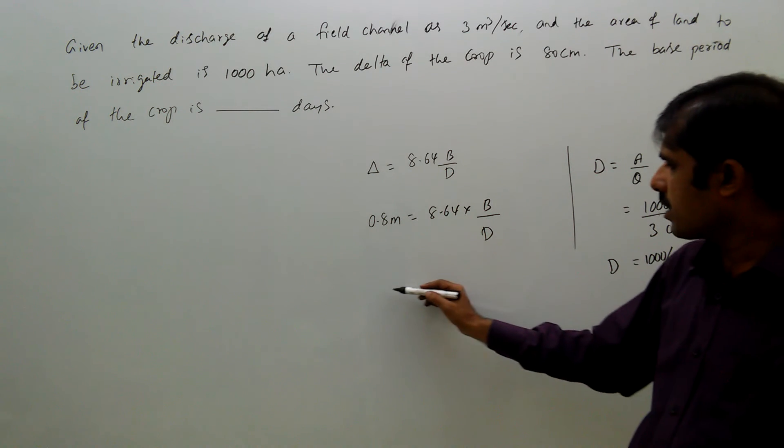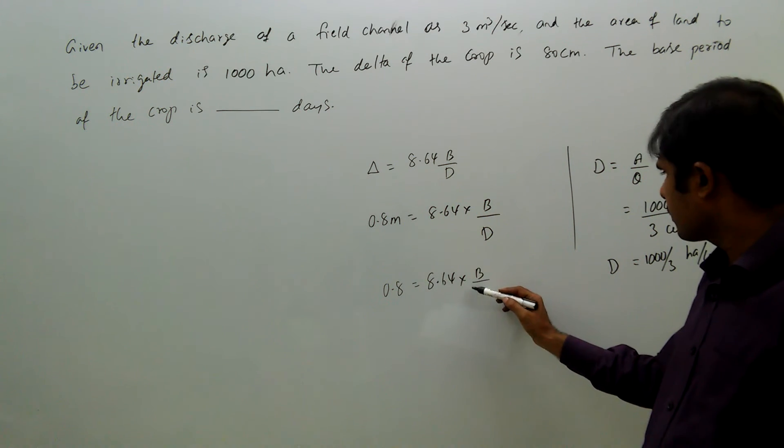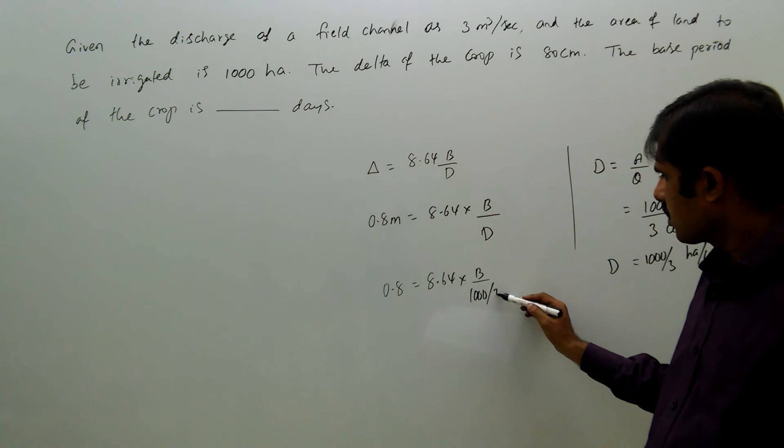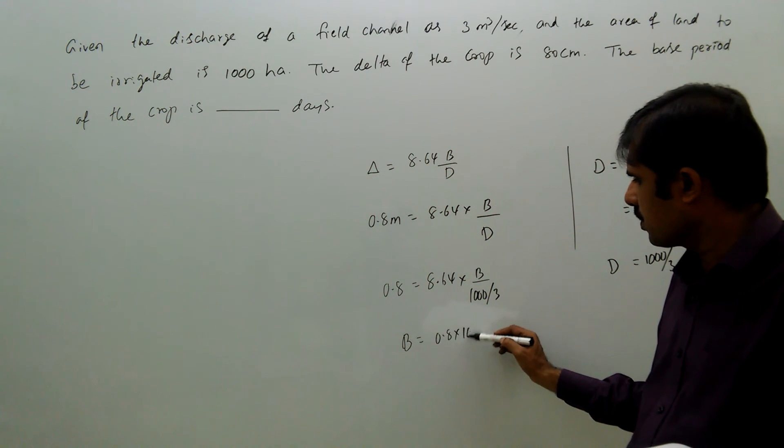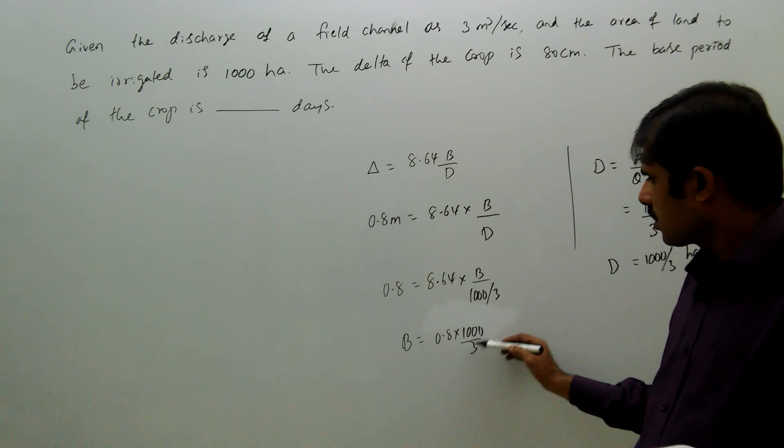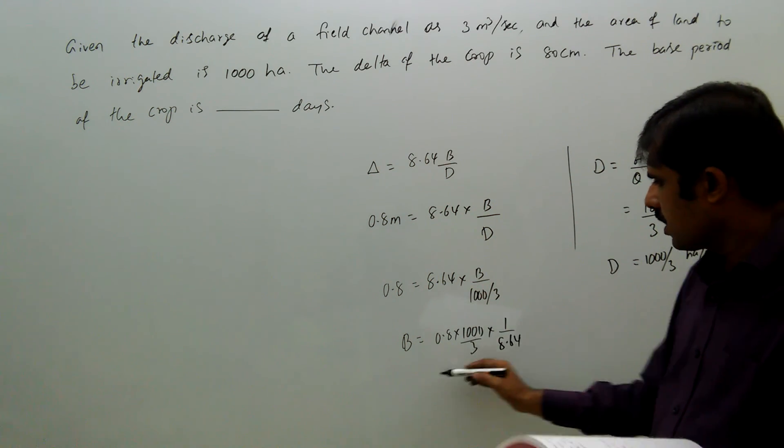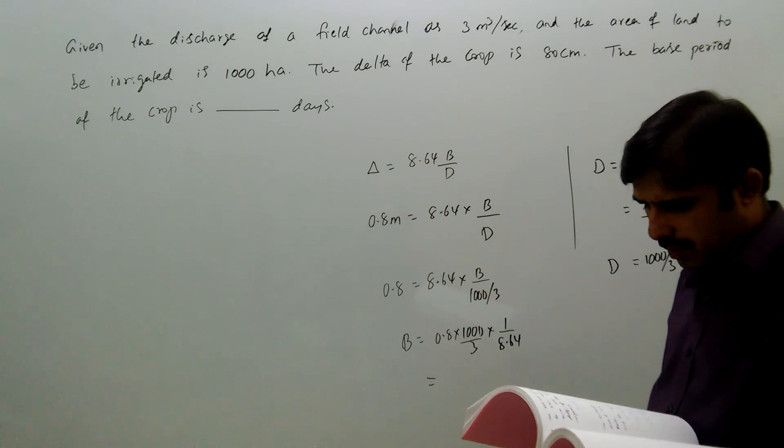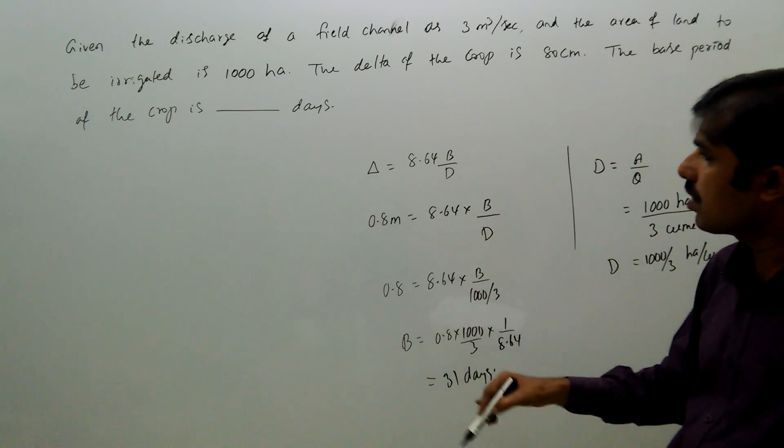Substituting that value here, 0.8 equals 8.64 times B by 1000 by 3. Therefore, B equals 0.8 times 1000 by 3 times 1 by 8.64, that is equal to 31 days. So, answer is 31.